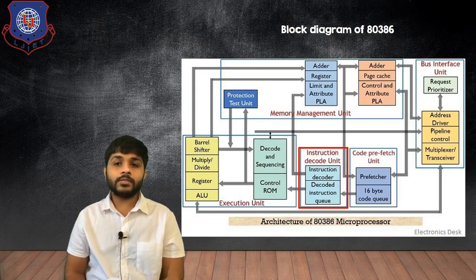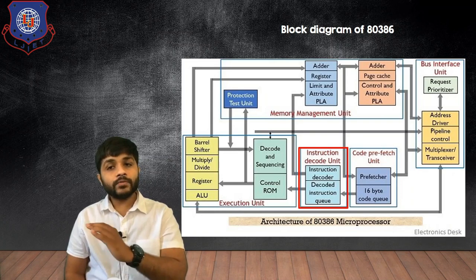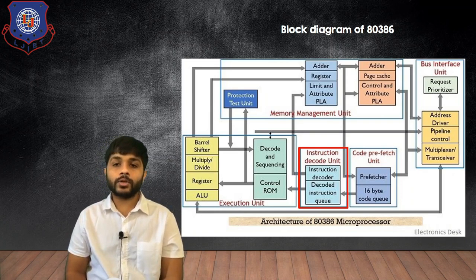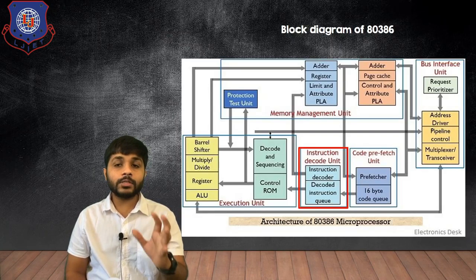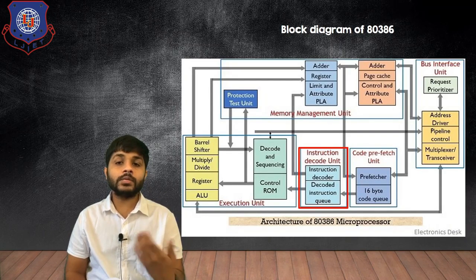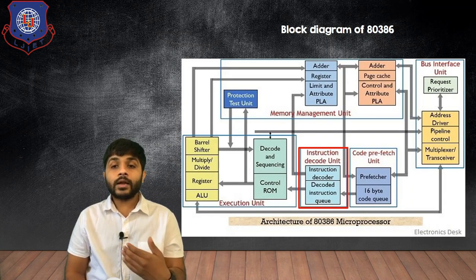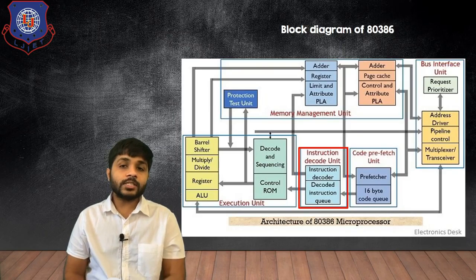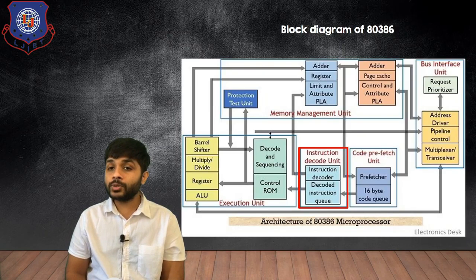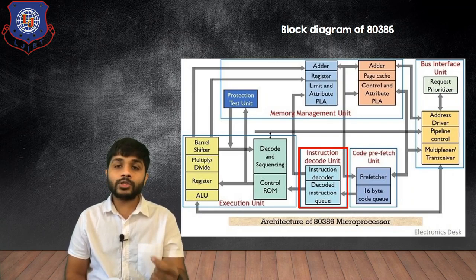The next block is the instruction decode unit. The instruction from the code prefetch unit will be transferred to the instruction decode unit, where the instruction will be decoded and the processor can understand what that instruction is trying to say. In the instruction decode unit there are different blocks such as the instruction decoder and the decoded instruction queue. When the instruction is received from the code prefetch unit, it will be decoded and the decoded instruction will be stored in the queue.